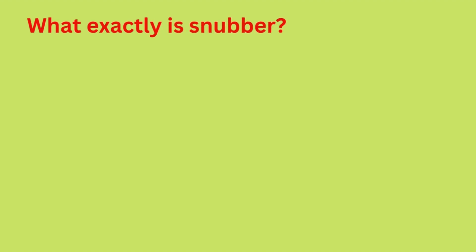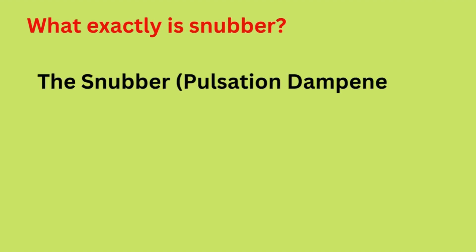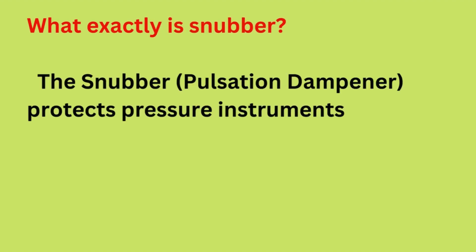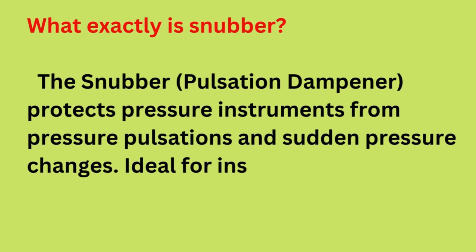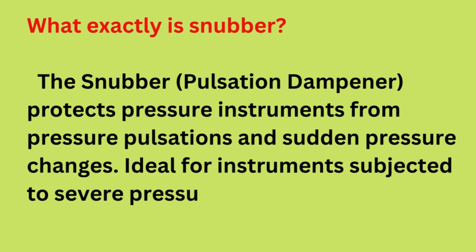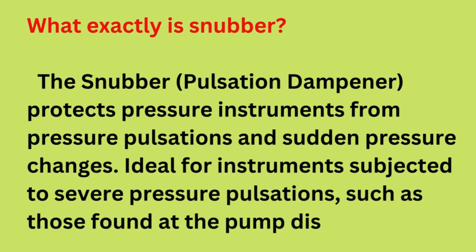What exactly is a snubber? The snubber, also known as a pulsation dampener, protects pressure instruments from pressure pulsations and sudden pressure changes. It is ideal for instruments subjected to severe pressure pulsations, such as those found at pump discharge.